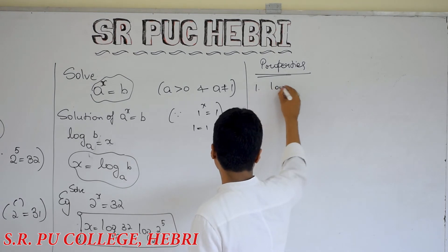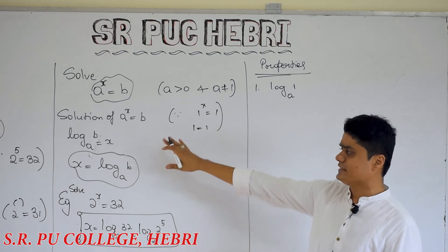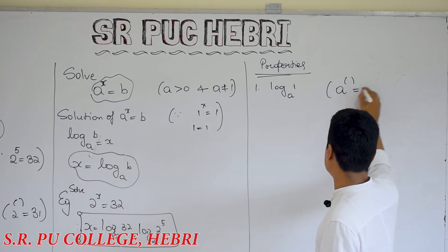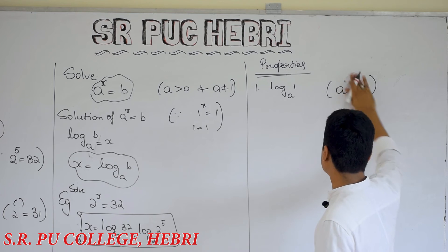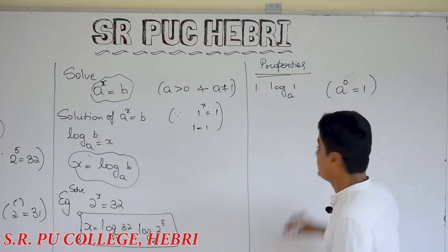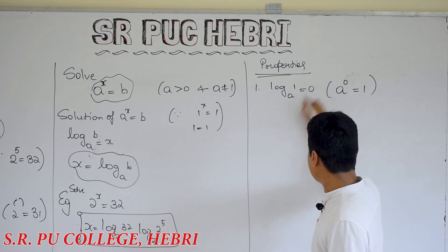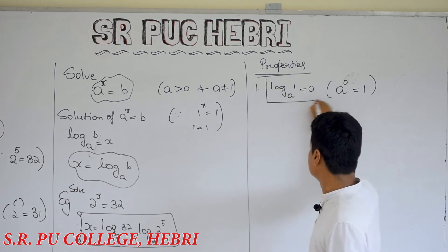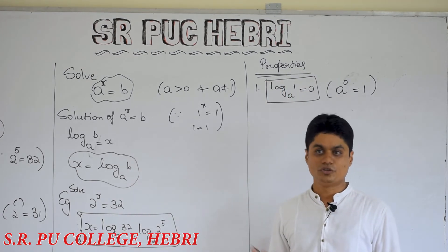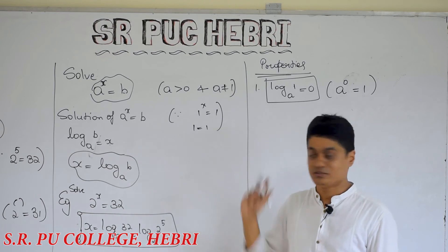First one: log of 1 to any base. Even if you do not know anything about logarithm, you can answer this, because you know when a power something becomes 1 — what is the power of a? The answer is: a power 0 is equal to 1. So log of 1 to any base is always equal to 0. This is a very, very useful value. Log of 1 to any base is always equal to 0 — you are definitely going to use this in physics, chemistry, and maths.